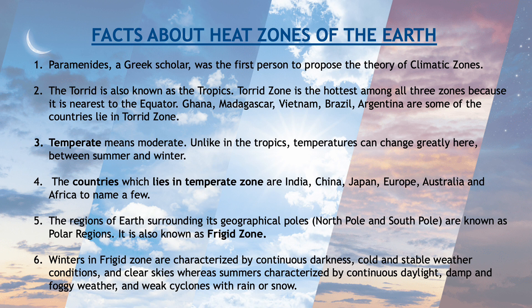The regions of earth surrounding its geographical poles — north pole and south pole — are known as polar regions. It is also known as frigid zone. Winters in the frigid zone are characterized by continuous darkness, cold and stable weather conditions, and clear skies. Whereas summers are characterized by continuous daylight, damp and foggy weather, and weak cyclones with rain or snow.